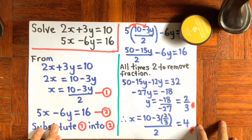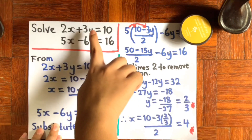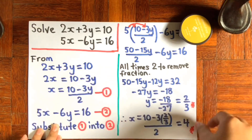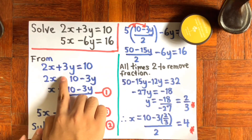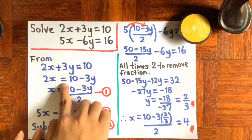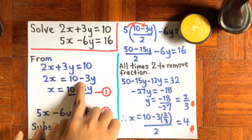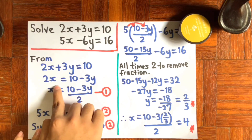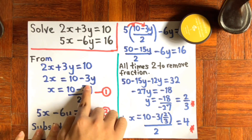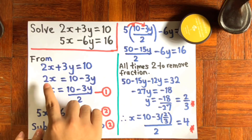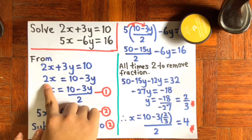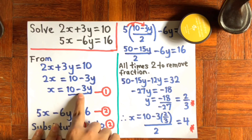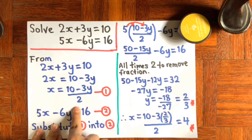So first, what you want to do is take the first equation: 2x plus 3y equals to 10. Then you bring the 3y to the other side, so from positive it's going to turn to negative, and it will become 2x equals to 10 minus 3y. Then the next step is you bring the 2 to this side, so x equals 10 minus 3y divided by 2.